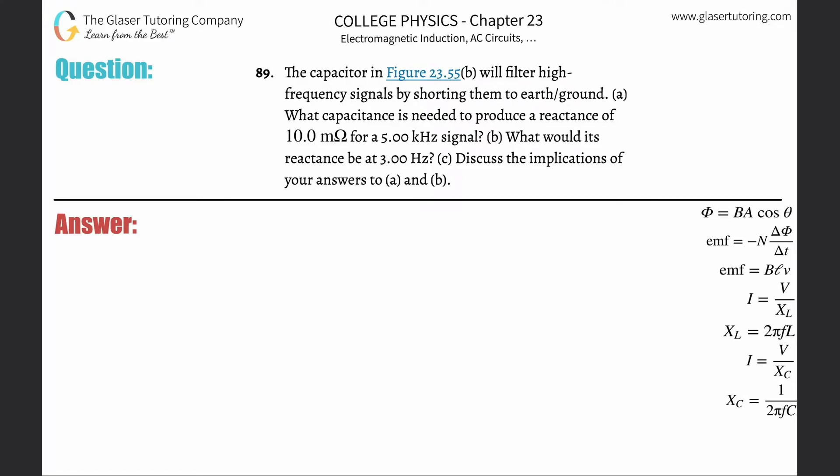Number 89. The capacitor in figure 23.55b will filter high frequency signals by shortening them to earth ground. Letter A: What capacitance is needed to produce a reactance of 10 milliohms for a 5 kilohertz signal?